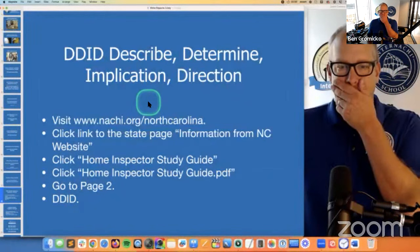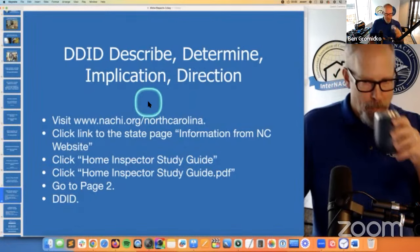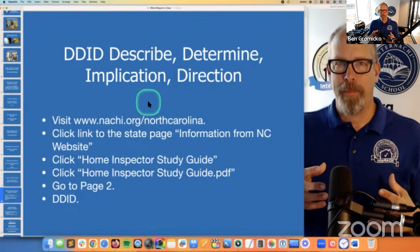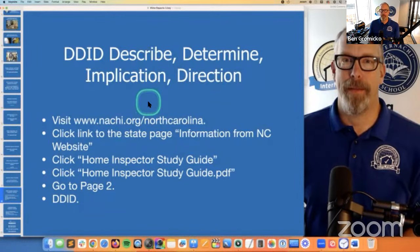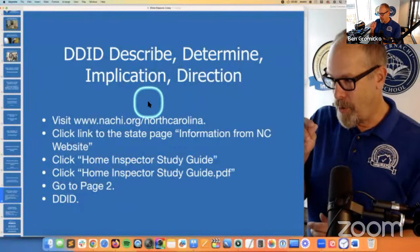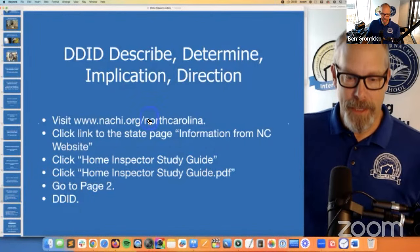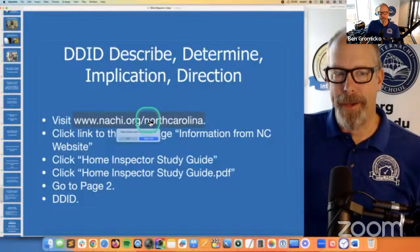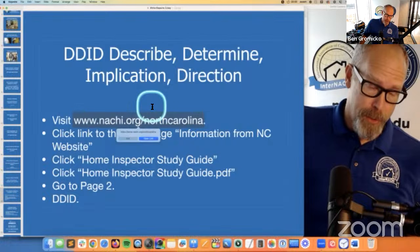DDID — this is something unique to North Carolina, though I haven't seen it in other areas. It stands for Describe, Determine, Implication, Direction. Describe: I'm describing what I'm doing. Determine: I'm determining if what I'm looking at is a problem. Implication: is this problem small or big? Direction: I'm giving clients direction on what to do. DDID — Describe, Determine, Implication, Direction.